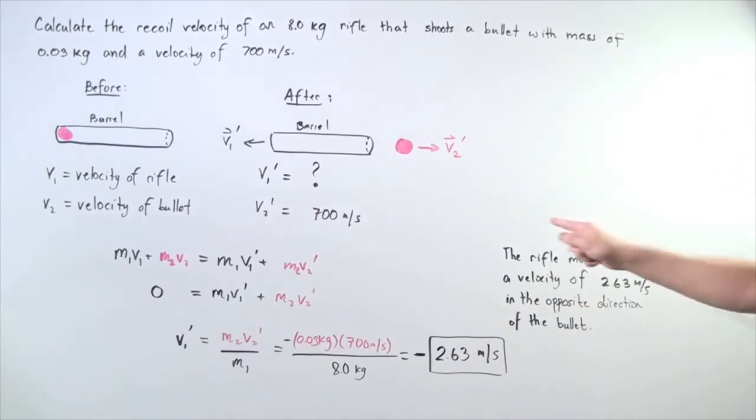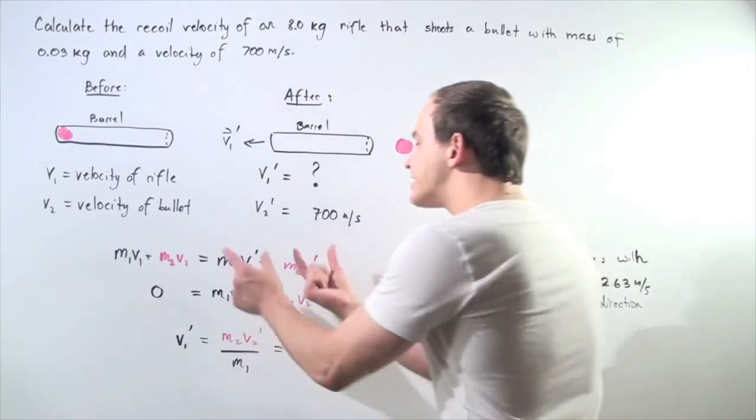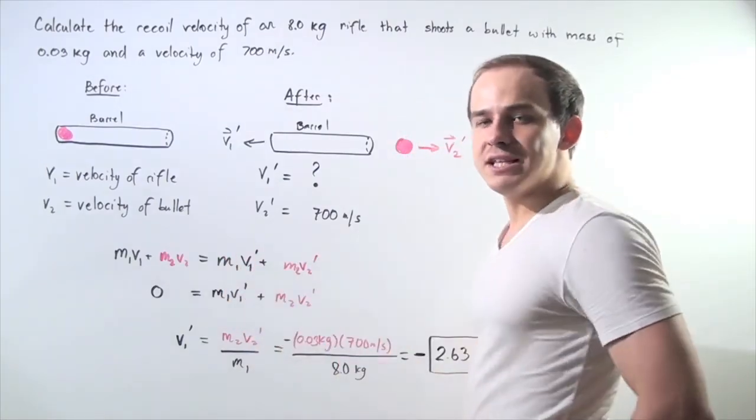We conclude that the rifle moves with a velocity of 2.63 meters per second in the opposite direction of the bullet. If we sum up these two momenta, that will give us 0.